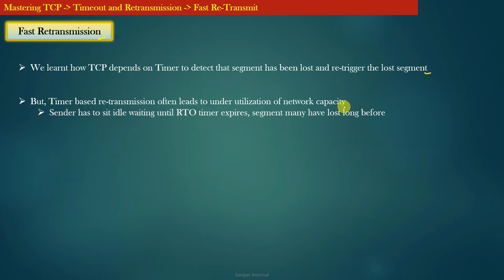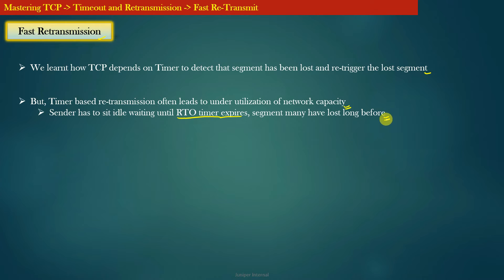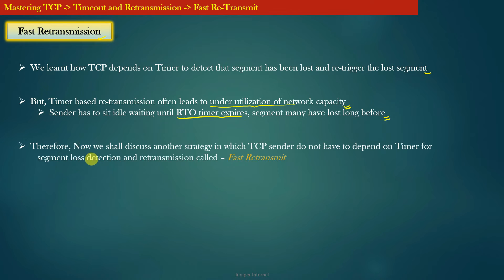The reason was simple: the TCP sender has to sit idle waiting for the RTO timer to expire. The TCP sender retransmits the lost segment only when the RTO timer expires. It might be possible that the TCP segment was lost long before, and the TCP sender is just uselessly waiting for the RTO timer to expire. This leads to underutilization of the network.